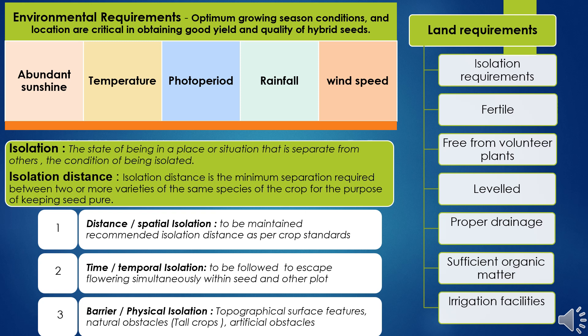Environmental conditions are the primary requirement for hybrid seed production. There should be optimum growing season conditions, and locations are critical in obtaining good yield and quality of hybrid seeds. Regions with abundant sunshine are preferred unless the parental lines are specifically sensitive to a particular temperature and photoperiod for flowering and male sterility expressions.